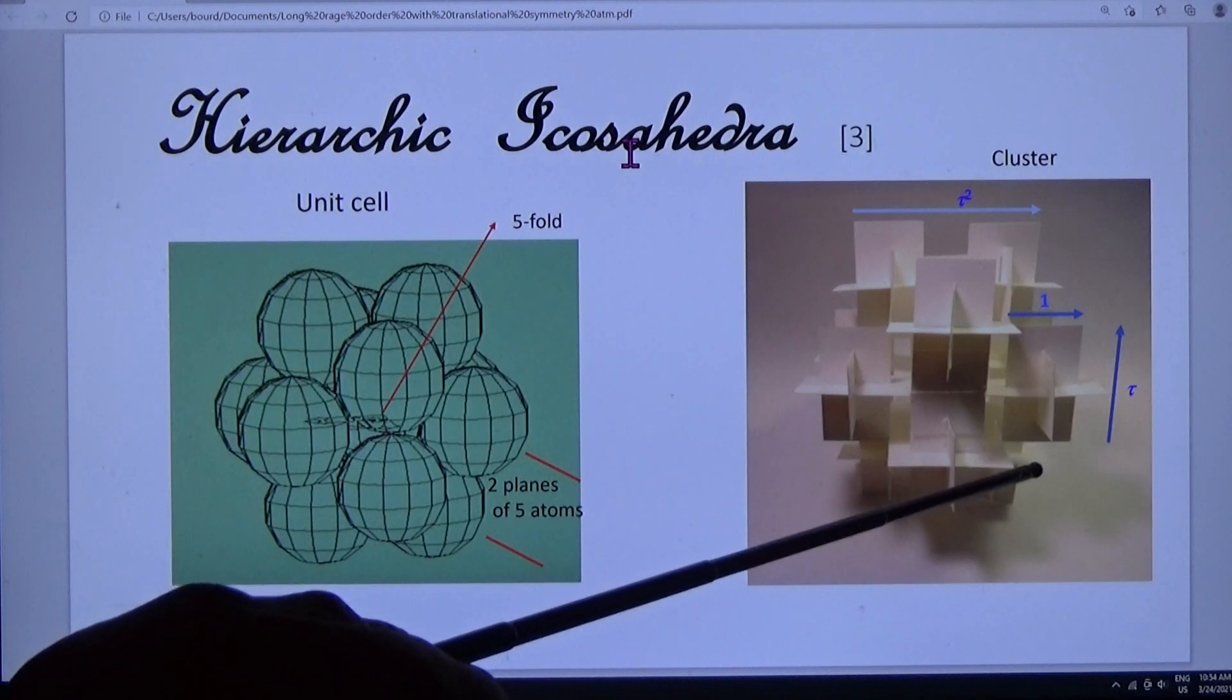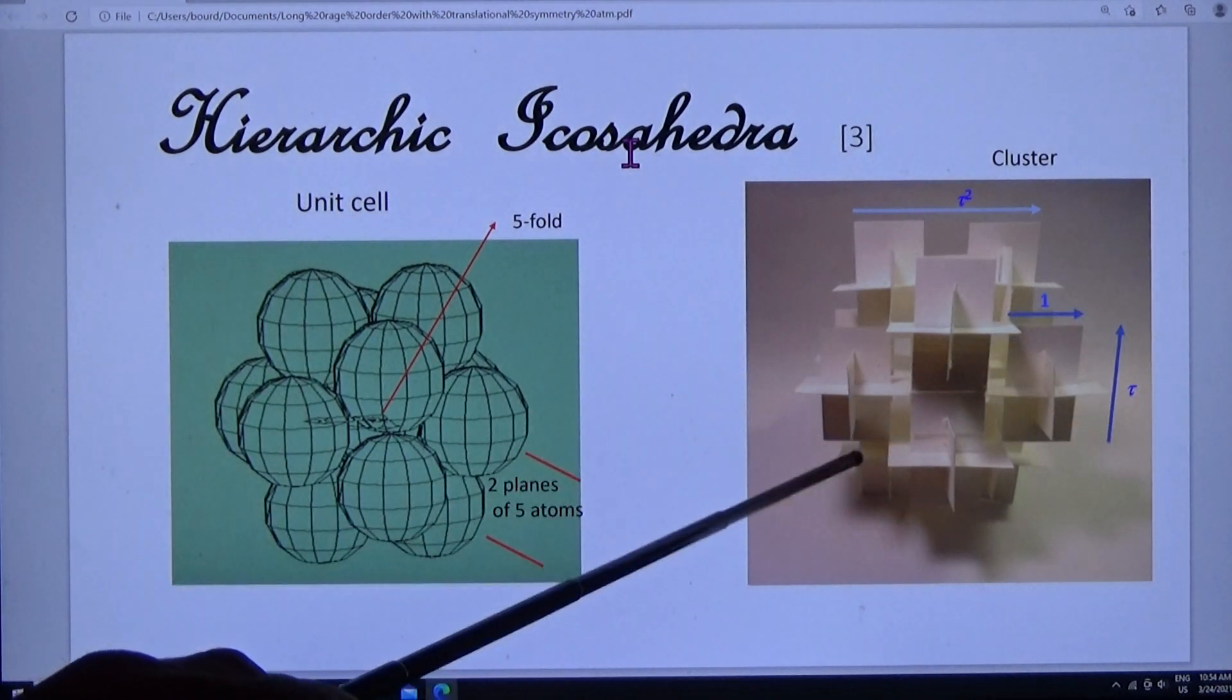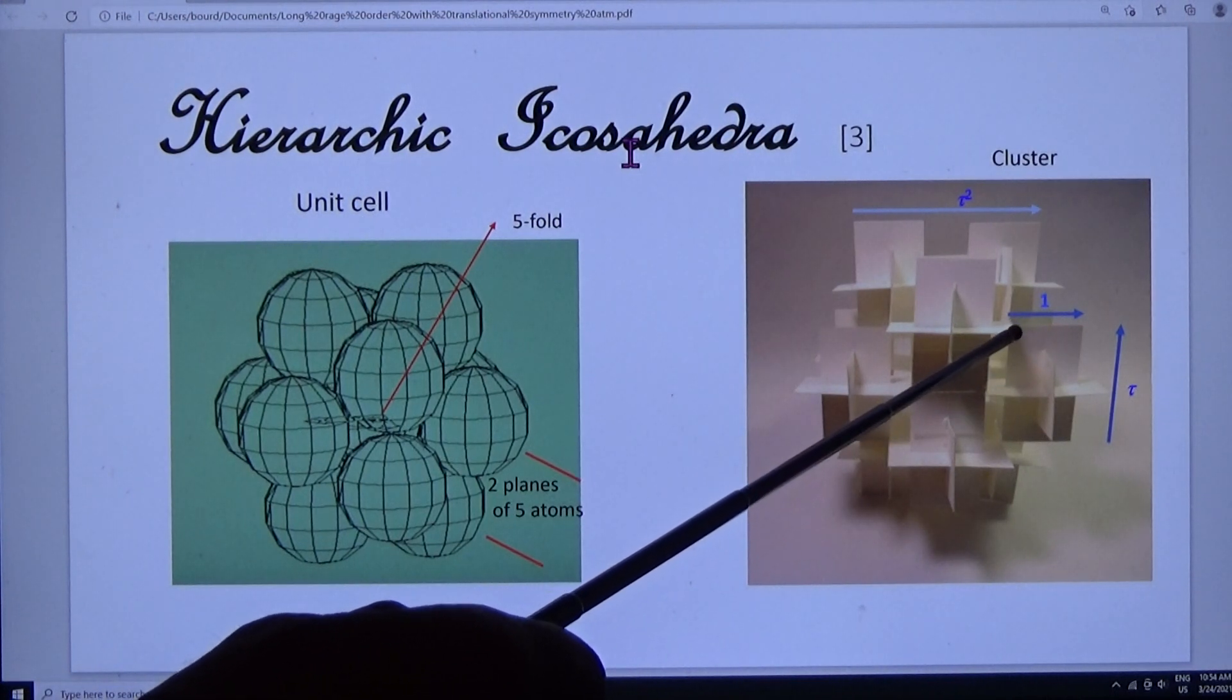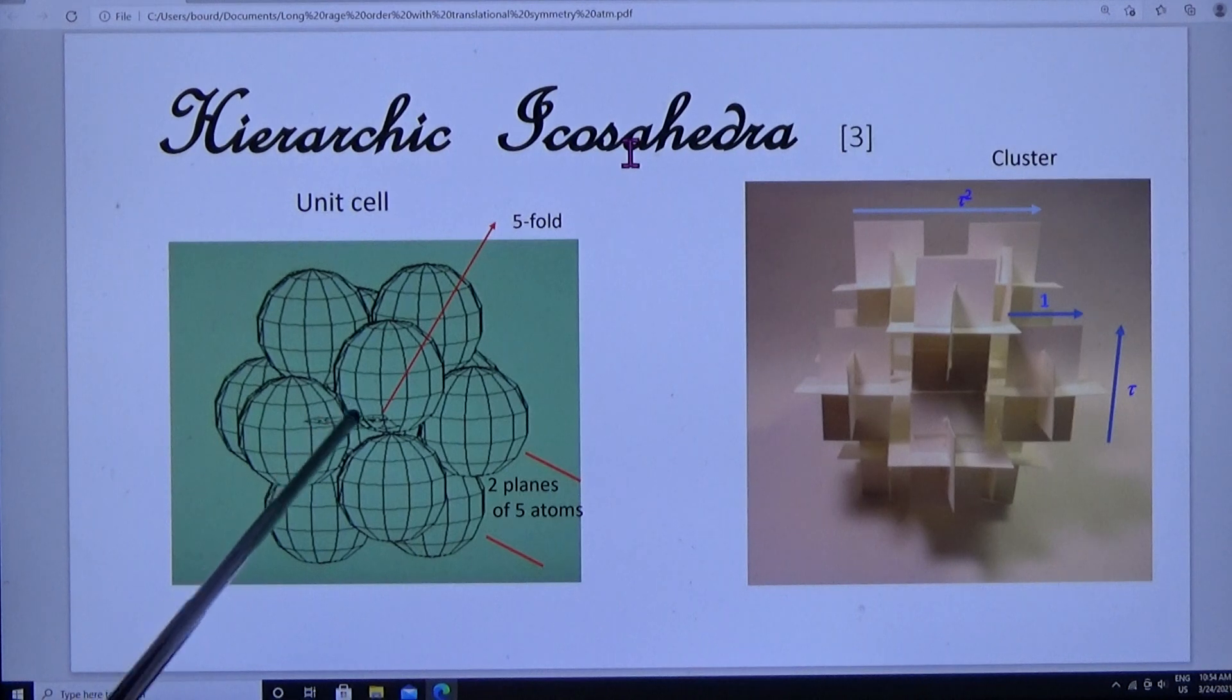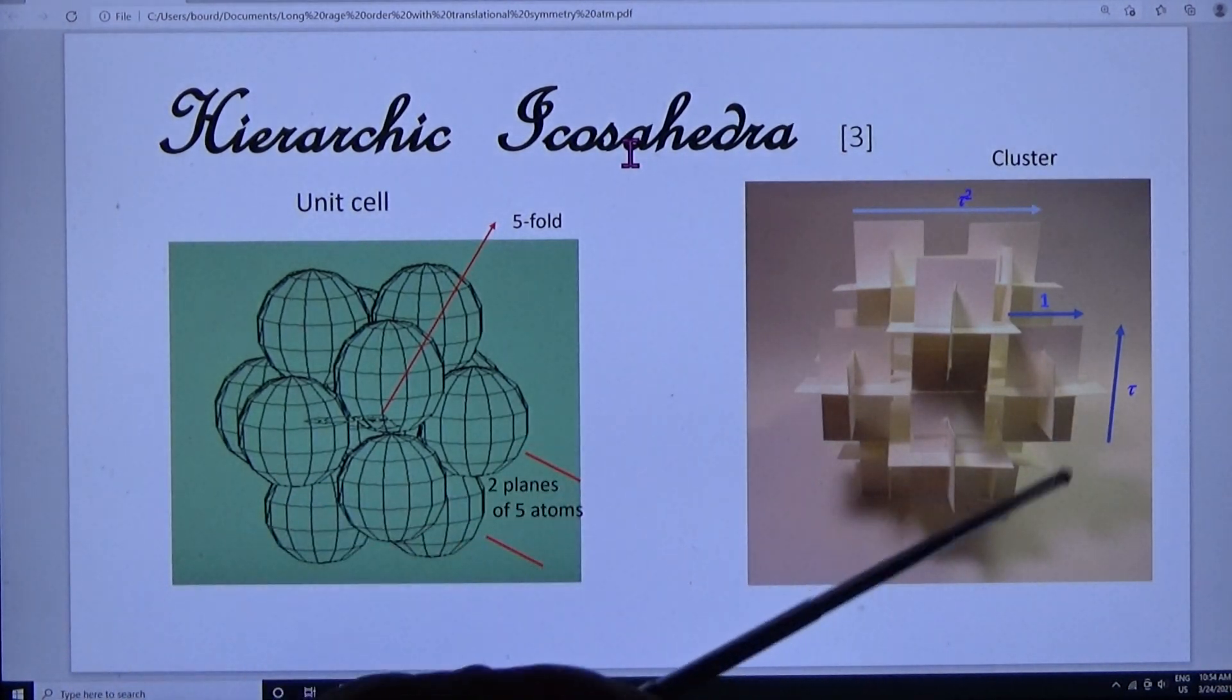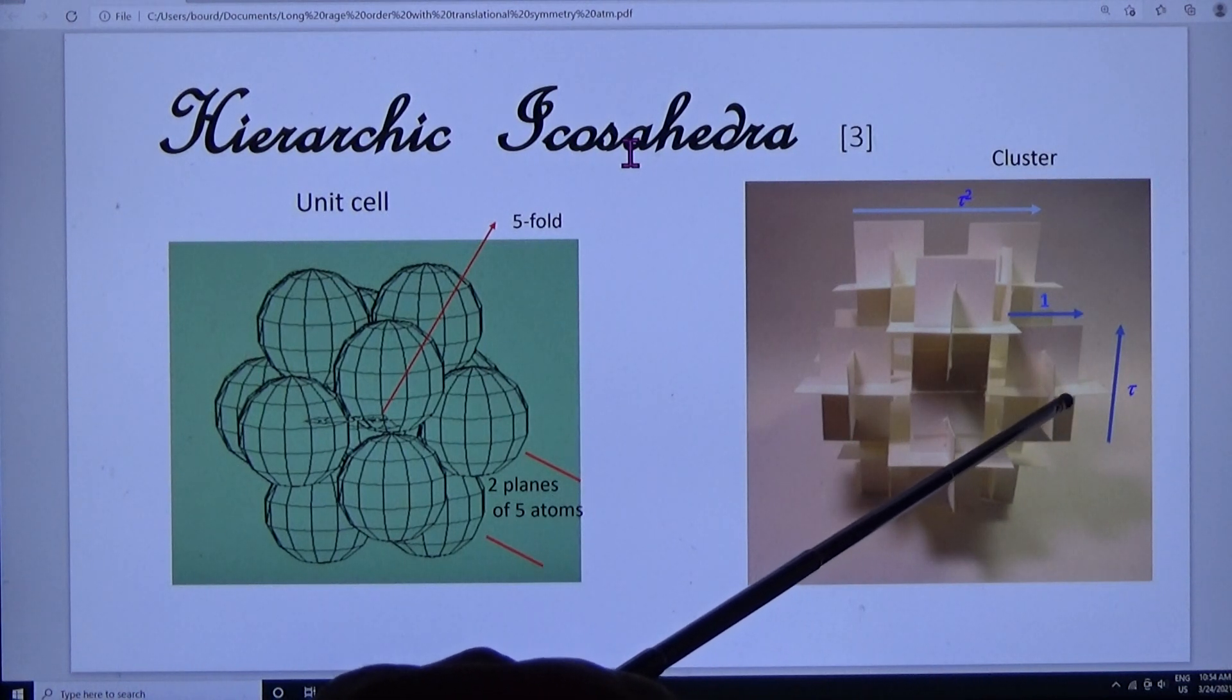They cluster to form a hierarchic cluster. Notice that the edge width of the icosahedral unit cell stretches to tau squared in the icosahedral cluster and to tau to the power 4 in the supercluster, etc.